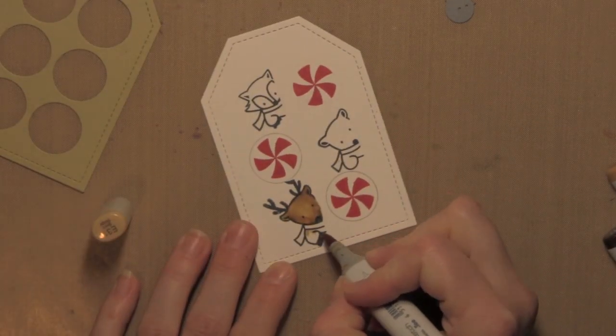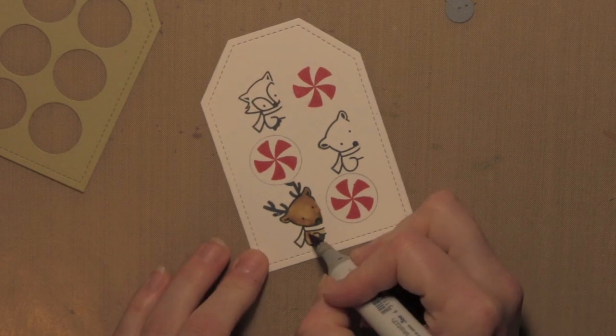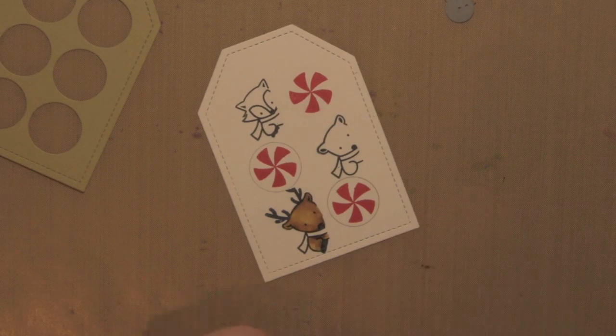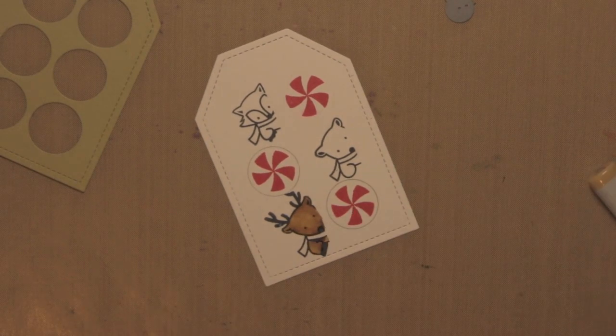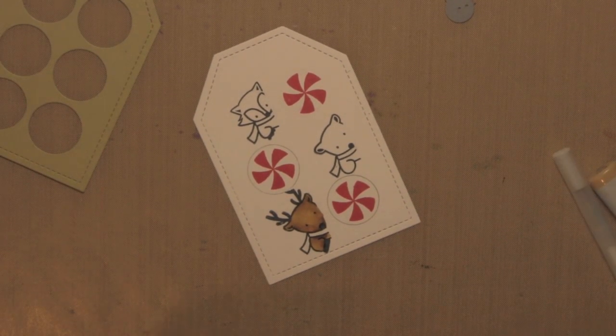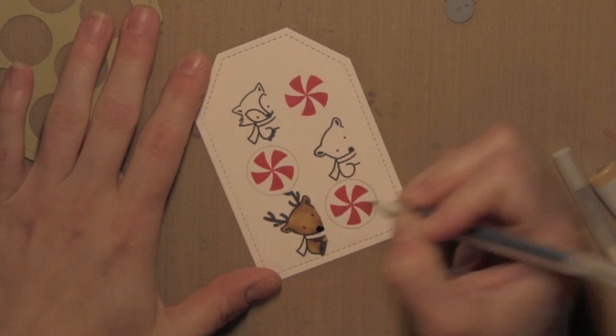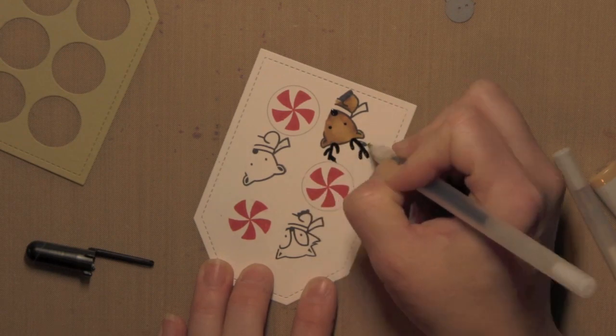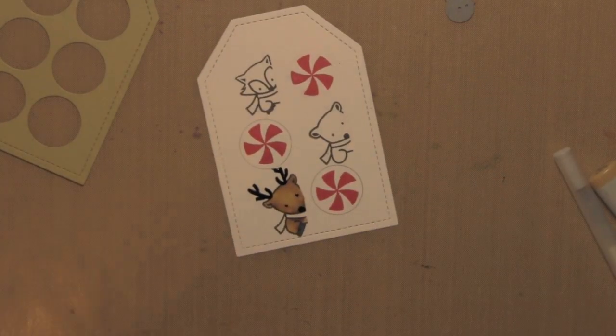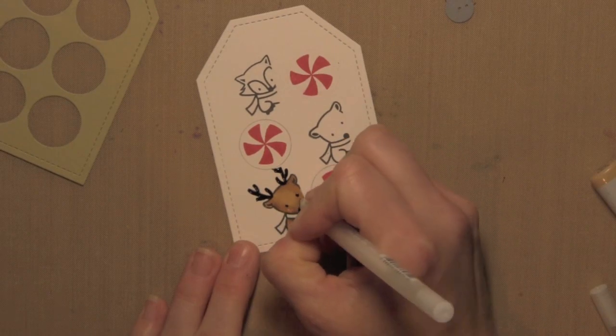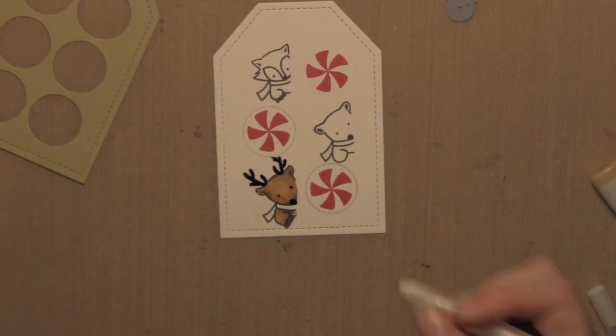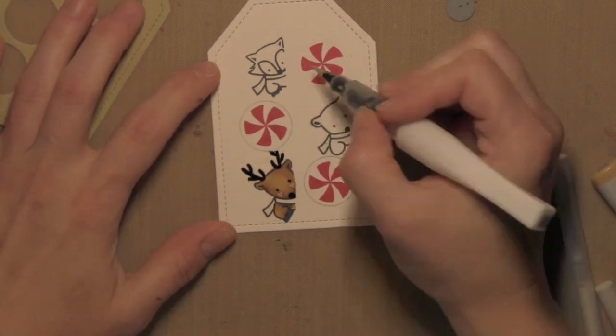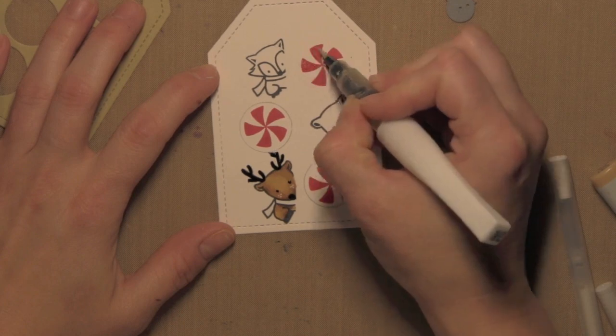So once I have all of the coloring done, I've erased some of the lines as well. I don't want the lines to show once the shaker is put together and you have that foam tape in place. I like to make sure I erase all of those. I like to take a black gel pen and then add detail to the eyes and the nose and also the reindeer for this particular image. And then I used a white gel pen to add some little dots to his cheeks just for fun.